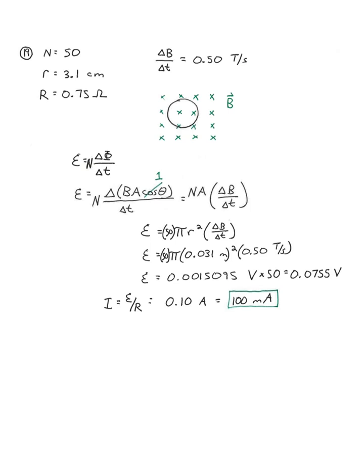Let's look at the given information. We have N equals 50 coils. What's more important than the diameter is the radius, so let's go ahead and put that 3.1 centimeters. We have the resistance. We have the rate of change of the magnetic field, and we've got the coil perpendicular to the magnetic field.